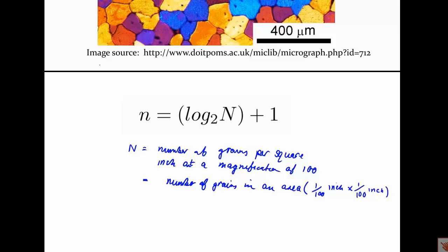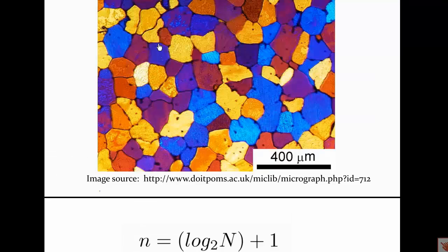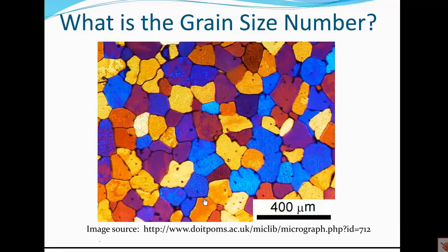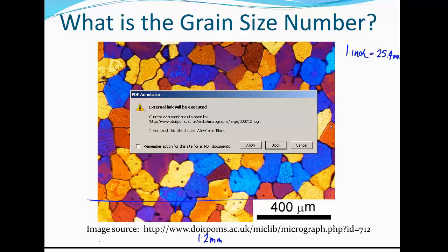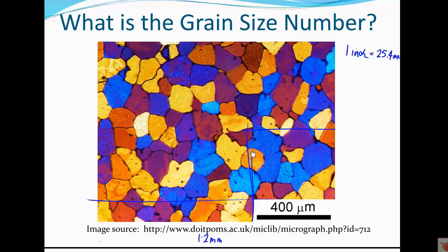We have an optical image with a scale bar showing 400 micrometers, or roughly 0.4 millimeters. An inch is equal to 25.4 millimeters. The image is roughly 1.2 millimeters across. What we can do is look at a region 400 micrometers by 400 micrometers and calculate the density of grains.